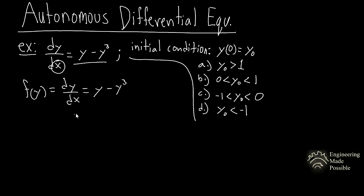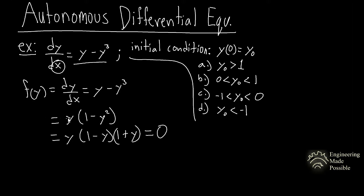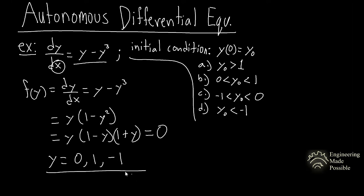The first step is to find what we call the critical points, also known as equilibrium solutions and stationary points — basically the zeros of this function. Factoring out y gives y(1 - y²), which factors further as y(1 - y)(1 + y) = 0. So the zeros are y = 0, y = 1, and y = -1. These are your critical points.